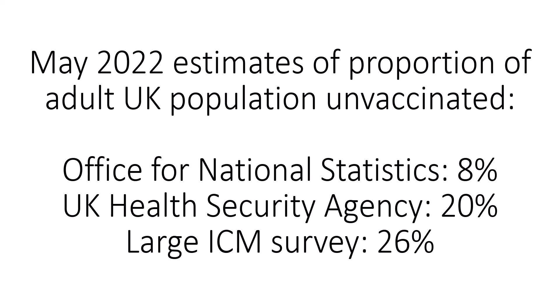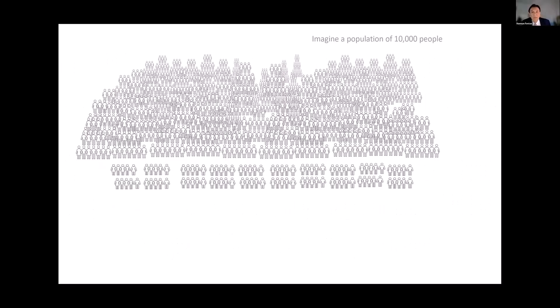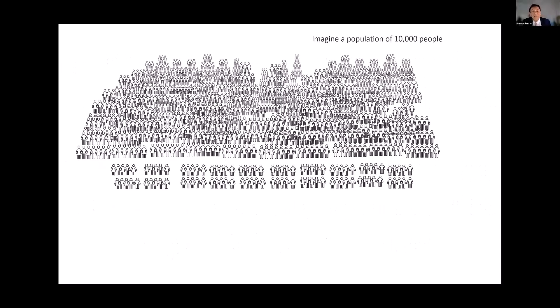We know that estimates of the true proportion of people vaccinated in a population can vary dramatically between different sources, and such differences have a dramatic impact on estimating the safety and efficacy of vaccines.